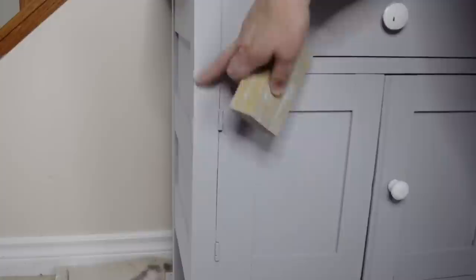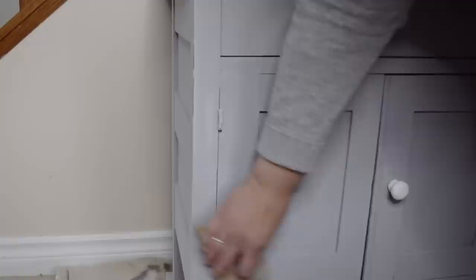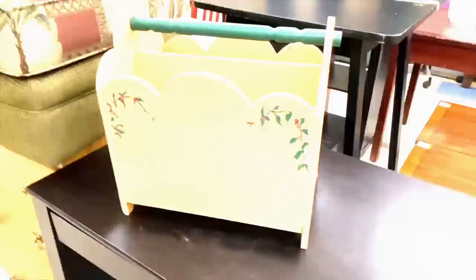The last thing I need to do is take a sanding sponge to those edges and hardware where I rubbed the candle at the beginning. The wax from the candle protected those surfaces and now allows me to add a little distressing without going right down to the wood. My sad little wash stand has been completely transformed and you wouldn't even know it was the same piece.